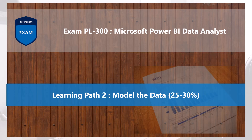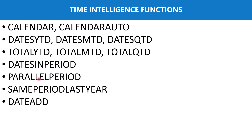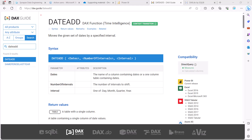Welcome back to the PL300 exam preparation series, exploring the second learning path: model the data. In this video we will continue the topic of implementing time intelligence measures. The last set of time intelligence DAX functions we are going to explore are PARALLELPERIOD, SAMEPERIODLASTYEAR, and DATEADD. We will start with DATEADD, look at the associated DAX pattern, then examine similarities and differences with the other two functions.